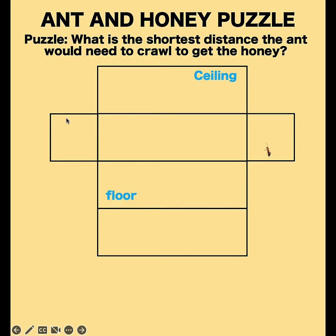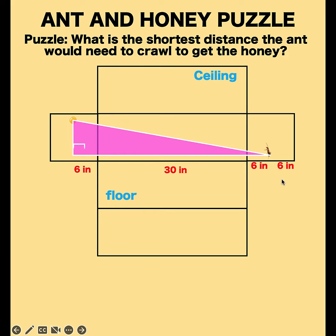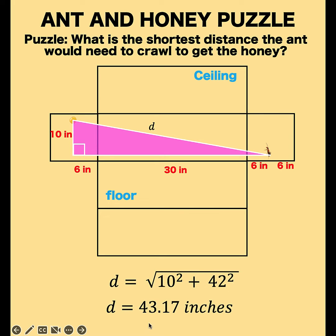The ant is located here and the honey is located here. The ant is at the middle, so since the width is 12 inches, this gives us 6 inches on each side. The length of the box is 30 inches, and the honey is at the middle so that distance is also 6 inches. We look at this right triangle. The height must be 10 inches because the ant is 1 inch above the bottom and the honey is 1 inch below the top. Using the Pythagorean formula, D equals the square root of 10 squared plus 42 squared, where 42 is 6 plus 30 plus 6. This gives D equals 43.17, which is even higher than 42 inches.